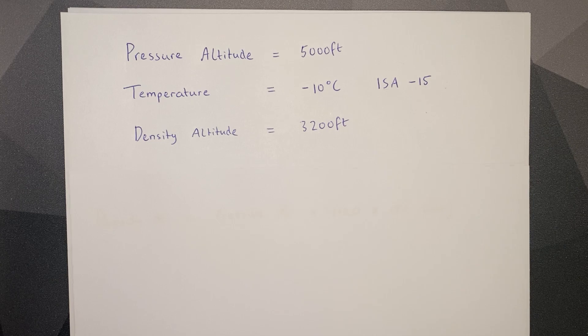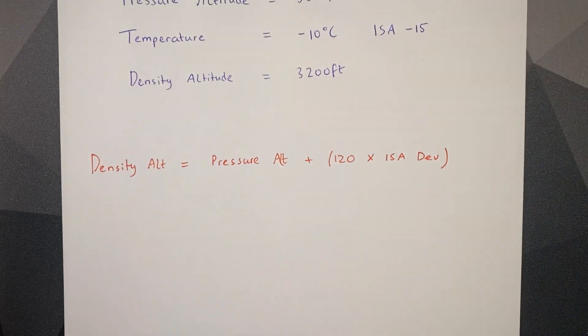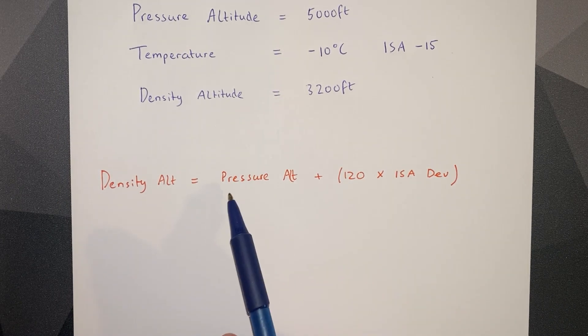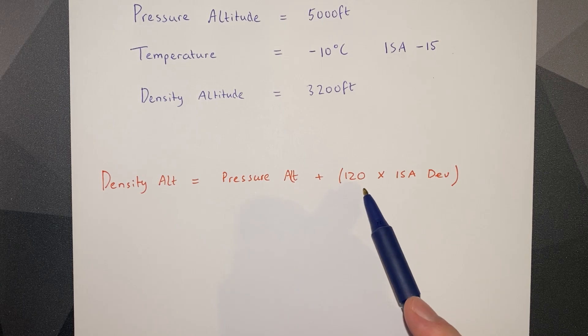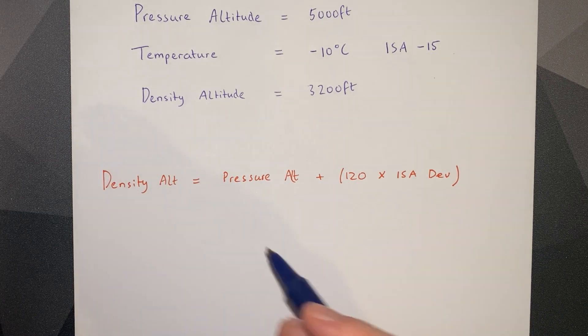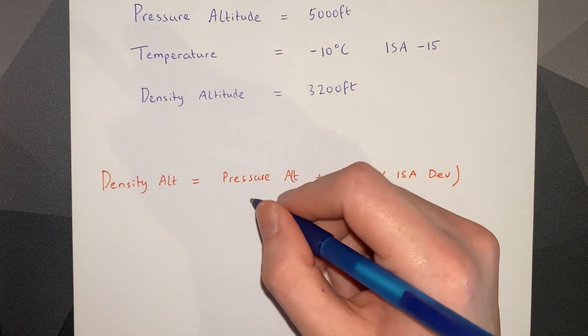The second method is to use a formula. The formula is: density altitude equals pressure altitude plus 120 times ISA deviation. Using the same example, we can fill out this formula.